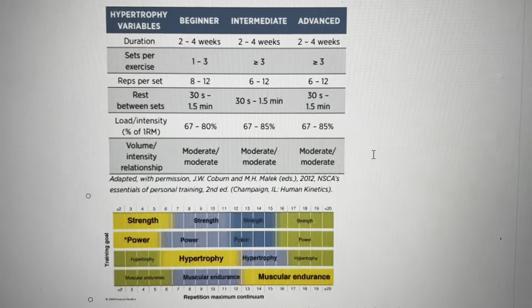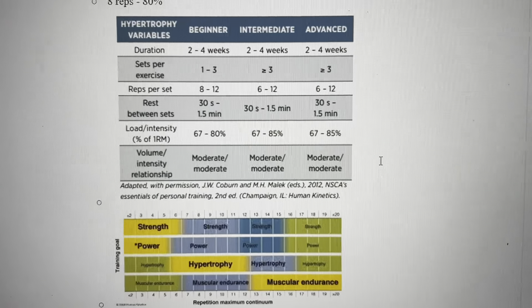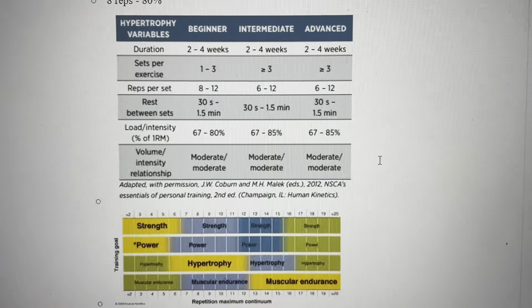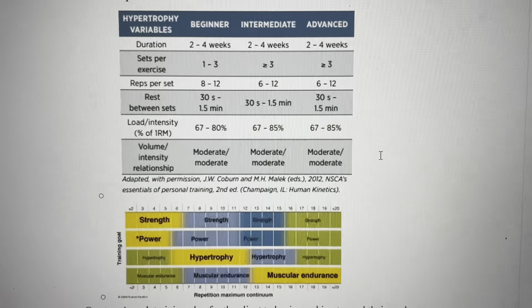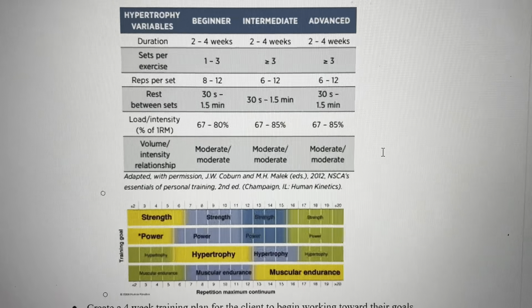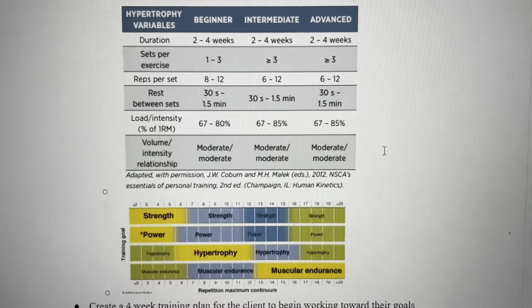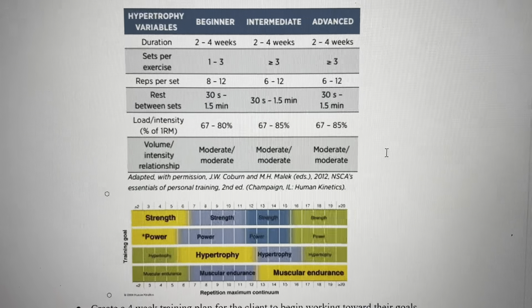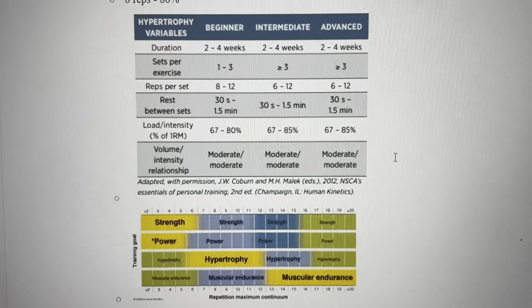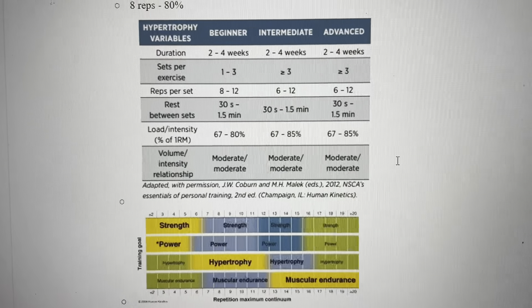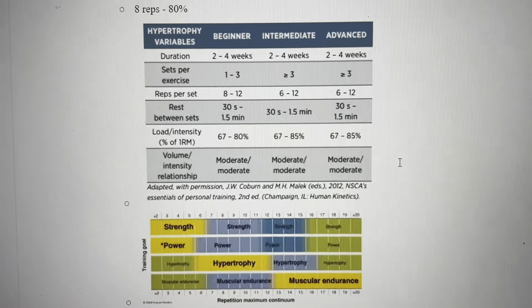These are the tables used to determine where you're at as a beginner, intermediate, or advanced level. They tell us what our regimen is going to look like: sets per exercise, reps per set — all related to hypertrophy variables. At the bottom, we can see how many reps we need to increase hypertrophy, so we're going to be in that 6 to 12 rep range for this simulation.